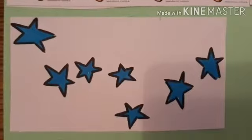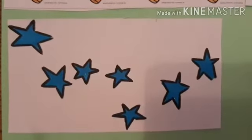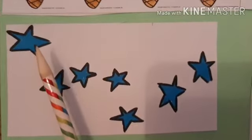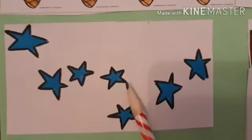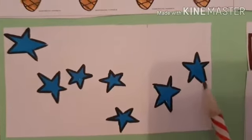How many stars can you see? Yes, there are 7 stars. 1, 2, 3, 4, 5, 6, 7.